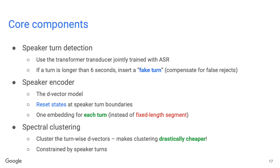There are three core components in the Turn-to-Diarize system. First, the speaker turn detection model, which is a transformer transducer jointly trained with ASR. If a speaker turn is longer than 6 seconds, we insert a fake turn to avoid a single speaker turn being too long, compensating for false rejects. Next, the speaker encoder resets its states at speaker turn boundaries and computes one speaker embedding per turn — very different from previous systems that compute embeddings for fixed-length segments. Finally, spectral clustering operates on turn-wise d-vectors, which is drastically cheaper because there are far fewer turns than fixed-length segments.